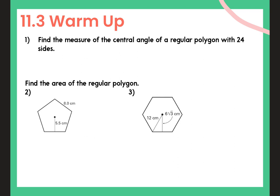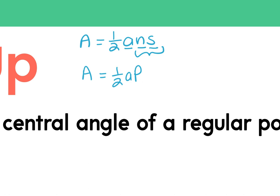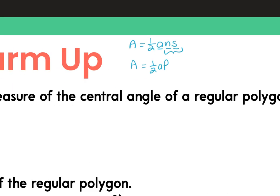In 11-3 we talked about finding the area of regular polygons, and we learned the formula was either one-half a·n·s, where a is the apothem, n is the number of sides, and s is the length of each side. Or you could do one-half a·p, because p is the perimeter, which is the number of sides times the length of each side.